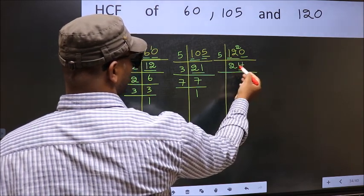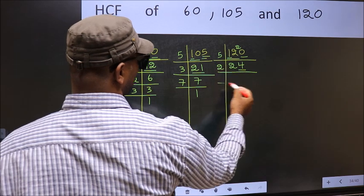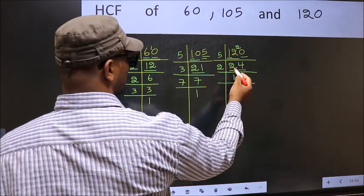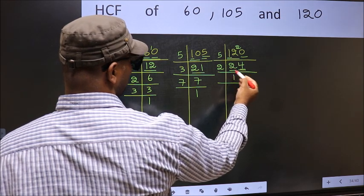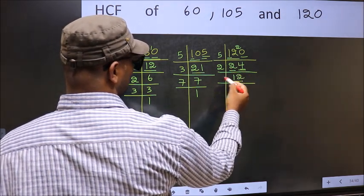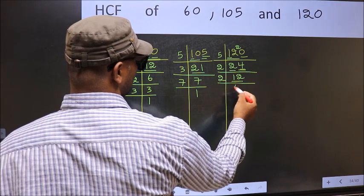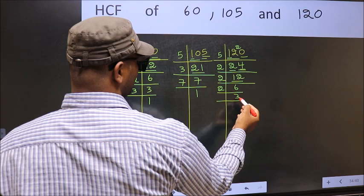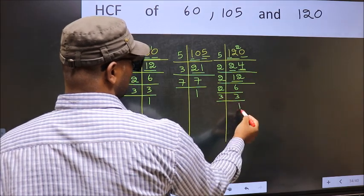Now last digit 4, even, so take 2. First number 2, when do we get 2 in 2 table? 2 once 2. The other number 4, when do we get 4 in 2 table? 2 times 2 is 4. Now 12 is 2, 6, 12. 6 is 2, 3, 6. Now 3 is a prime number, so 3 once 3.